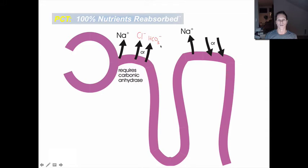Which one gets reabsorbed depends on what's going on. One important job of the kidneys is to maintain pH balance. Bicarbonate is a key player — if someone's blood is too acidic, we can preferentially reabsorb sodium bicarbonate, and the bicarbonate will alkalinize the blood.